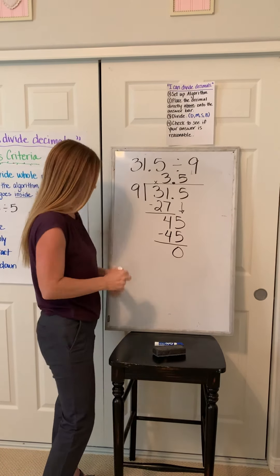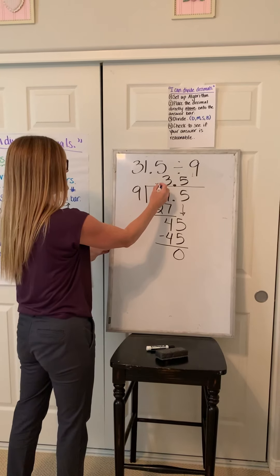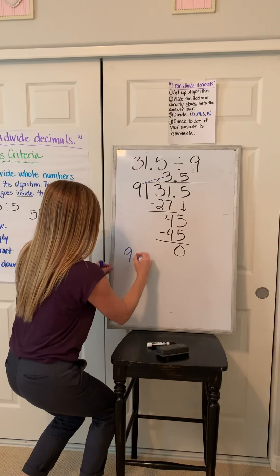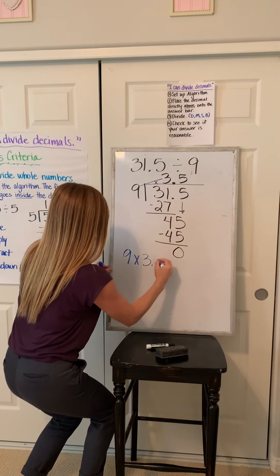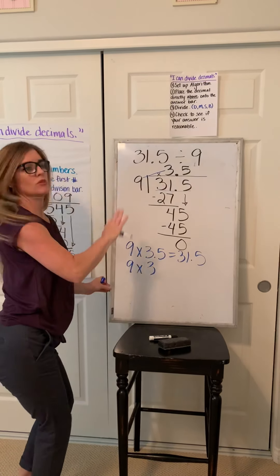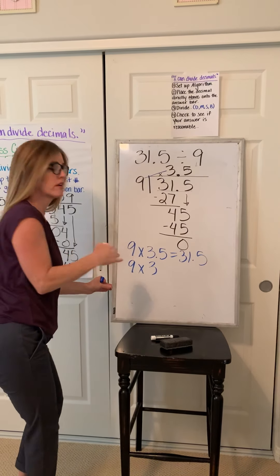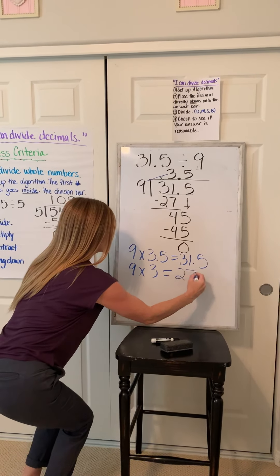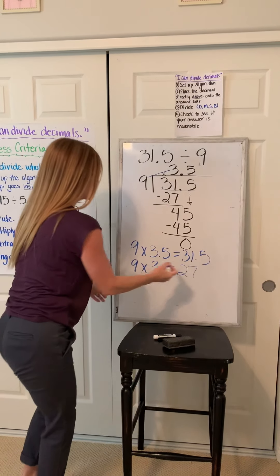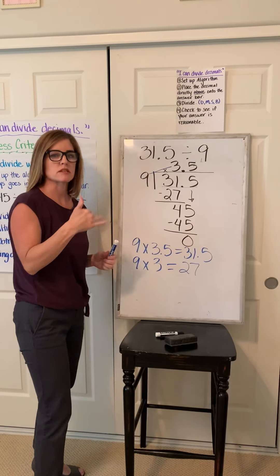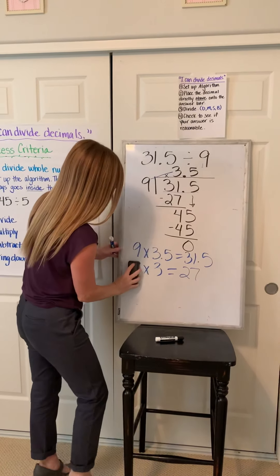The problems we're going to be doing will have no remainder for now. Now I'm going to check to see if it's reasonable. I'm going to turn this into a multiplication problem — I'm claiming this is my answer. Let's turn these into whole numbers: 9 times 3, just dropping that decimal off — 9 times 3 is 27. Twenty-seven is pretty close to 31 and a half, so I know my answer is in that reasonable range.